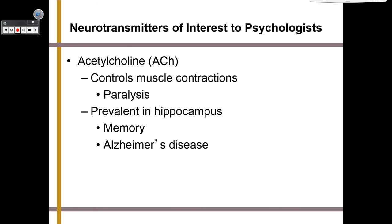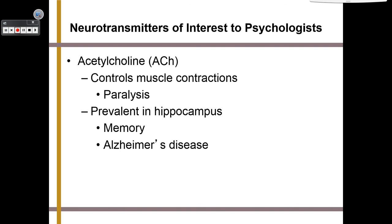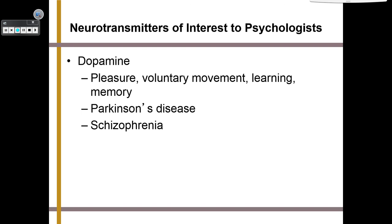Here are other neurotransmitters of interest to psychologists. Acetylcholine is linked to muscle contractions and paralysis, is very prevalent in your hippocampus, and is related to memory and developing Alzheimer's disease. Dopamine, the pleasure chemical, is also responsible for voluntary movement, learning, and memory — but having too much or too little can lead to Parkinson's disease or schizophrenia. Norepinephrine is an excitatory neurotransmitter that can accelerate your heart rate, affects eating, is linked to activity levels, learning, and remembering, but is also linked to mood disorders, depression, and bipolar disorder.